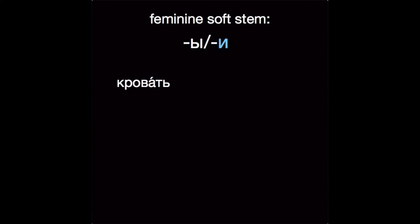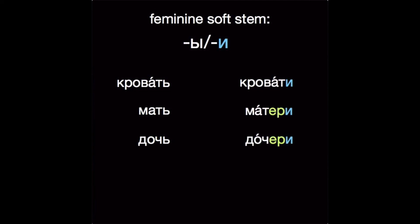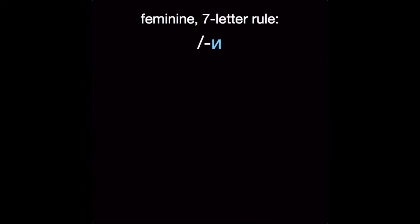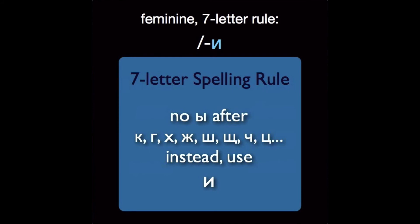Кровать → кровати. Now the words мать and дочь also count as soft stems, but watch out for how they also get an -ер- that appears whenever you add an ending: мать → матери, дочь → дочери. Семья → семьи — notice how we're not going to remove that soft sign if it was not the last letter in the word. We'll also need the letter И when the seven-letter spelling rule is involved — remember that after those seven letters, we use И in place of Ы.